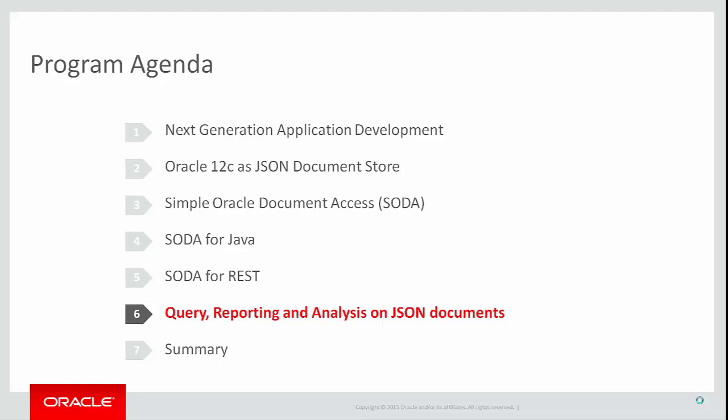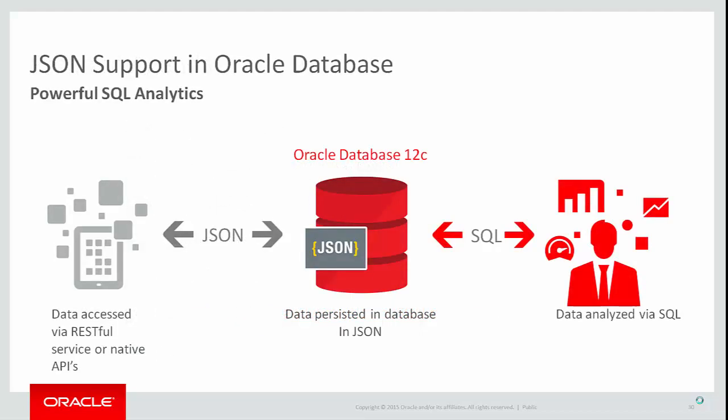We've seen how Oracle Database 12c can be used as a JSON document store and how the SODA family of APIs provides the kind of simple NoSQL-style application development popular with today's developers. Oracle Database 12c can provide the application developer with exactly the same kind of functionality and development experience as a NoSQL-style document store. Now let's look at the real benefit of choosing Oracle as your document store — the fact that you still have the full power of SQL available for reporting and analytics. Oracle Database 12c gives you all of that and more.